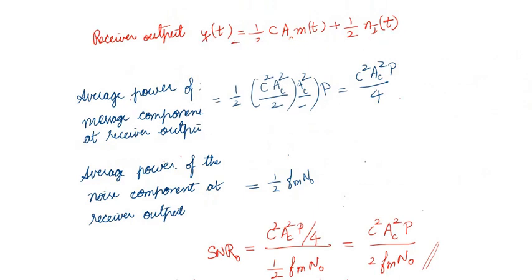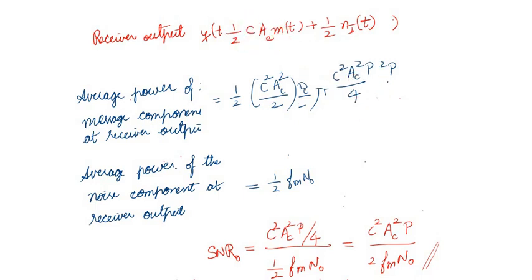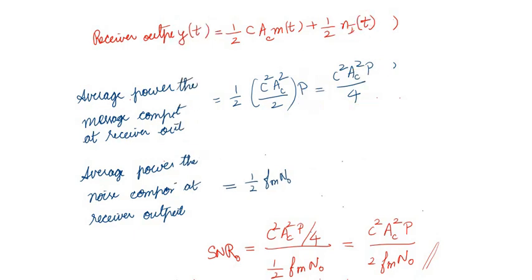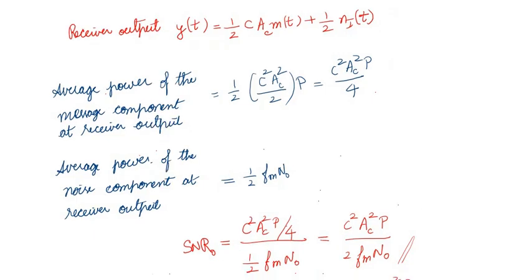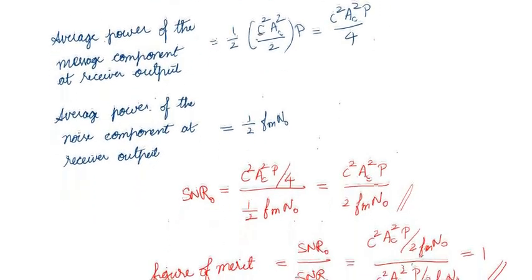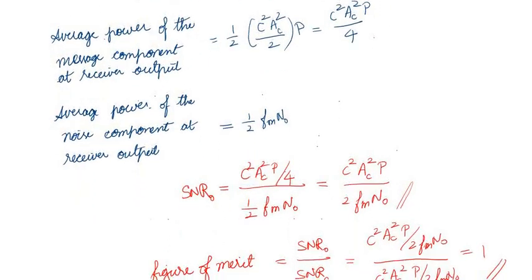For the receiver output y(t), the average power of the message part c·Ac·m(t)/2 is c²Ac²P/4. The average power of the noise part n_i(t)/2 is (1/2)·fm·N₀. The output signal-to-noise ratio is therefore the signal power c²Ac²P/4 divided by the noise power (1/2)·fm·N₀.